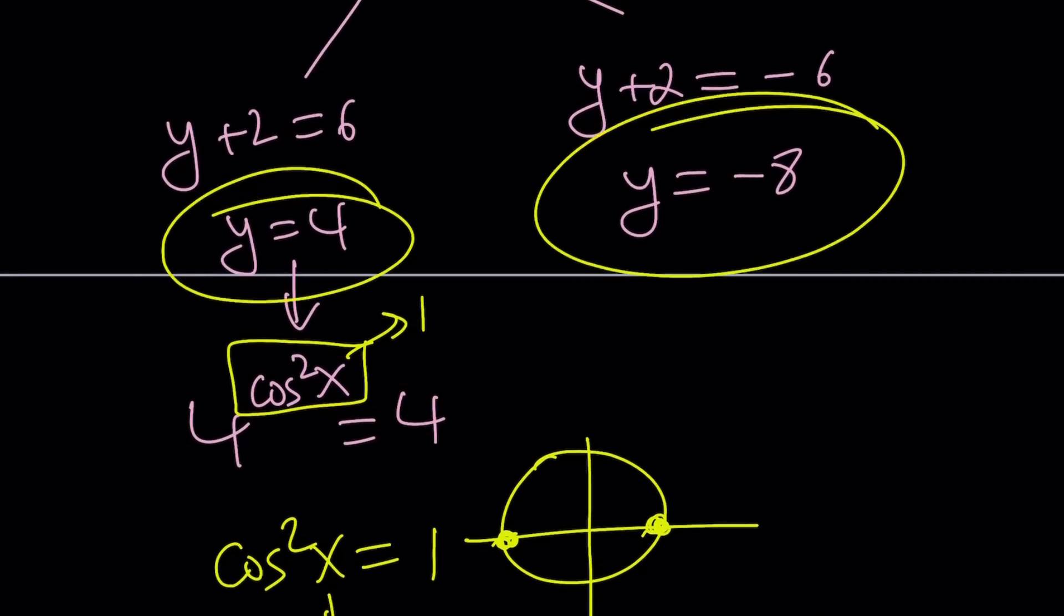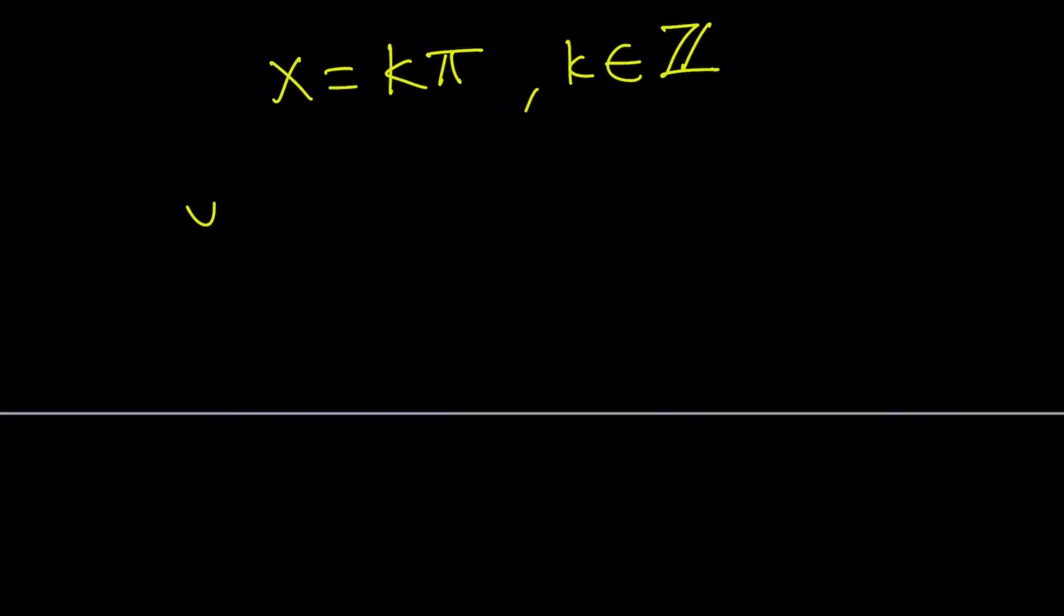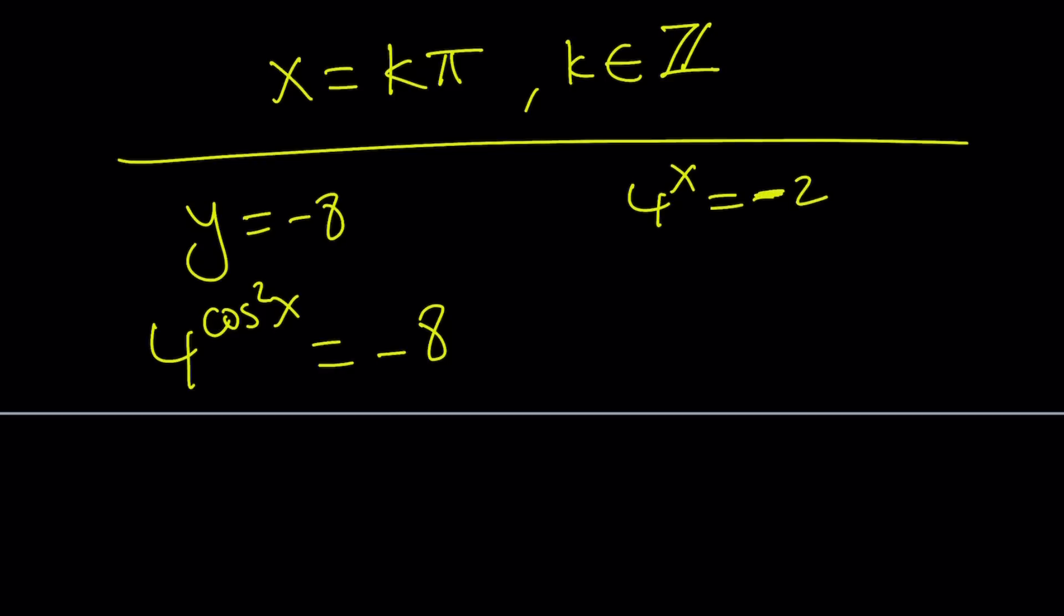So let's go ahead and take a look at the second solution. y equals 4 gave us that. Let's go ahead and take a look at y equals negative 8. y equals negative 8 implies the following. What is y? Right? It is 4 to the power cosine squared x. And from here, we get something real weird. Because 4 to the power of something cannot be negative. Or can it? I think in one of the previous videos, we had a situation where we start off with like a number like 4. We raise it to the power x. And the answer is negative.